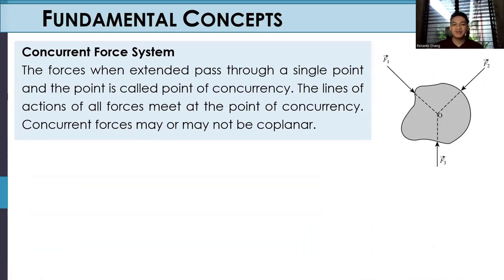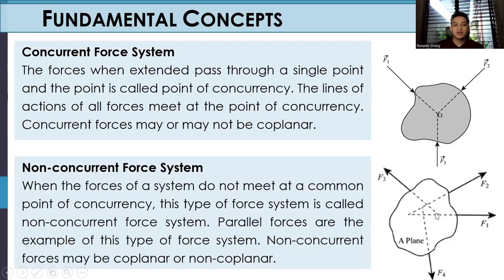Let's proceed with concurrent force system. The forces when extended pass through a single point and the point is called point of concurrency. The lines of actions of all forces meet at the point of concurrency. Concurrent forces may or may not be coplanar. As you can see in our figure, the three forces meet at our point O. Next would be non-concurrent force system. When the forces of a system do not meet at a common point of concurrency, this type of force system is called non-concurrent force system. Parallel forces are the example of this type. Non-concurrent forces may be coplanar or non-coplanar.